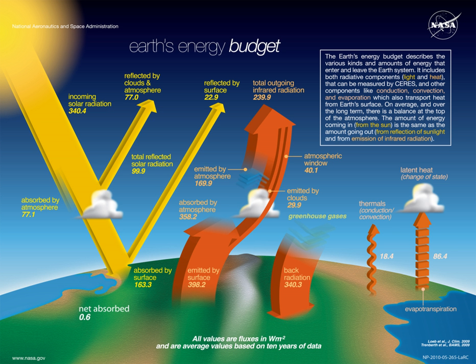Received radiation is unevenly distributed over the planet, because the Sun heats equatorial regions more than polar regions. The atmosphere and ocean work nonstop to even out solar heating imbalances through evaporation of surface water, convection, rainfall, winds, and ocean circulation.